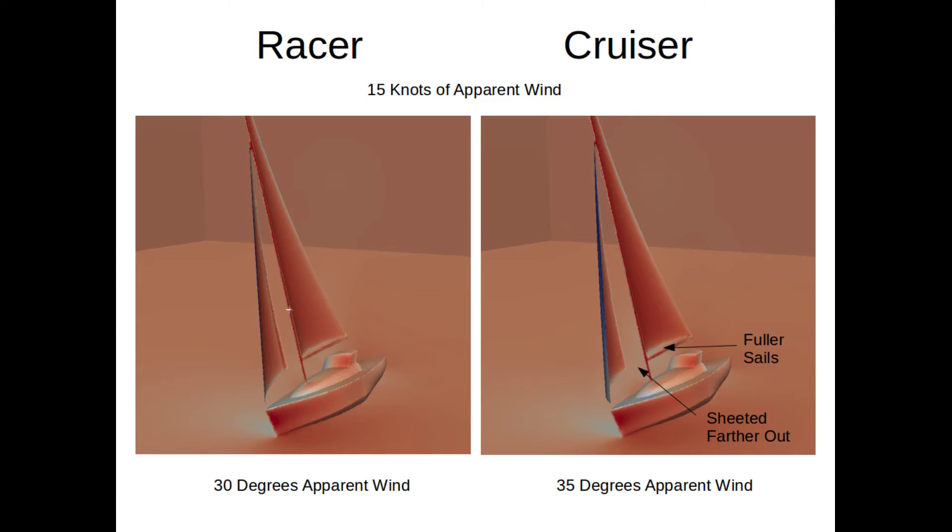Here are the two boats viewed from essentially upwind. The colorization is based on pressure where red is high pressure and blue is low pressure. We're looking at the high pressure side of the sails. At first glance these two pictures look pretty similar, but if you look carefully you can see that the racer sails are sheeted closer in than the cruiser. And also the racer sails are flatter. On the cruiser, you can actually see a little bit of the low pressure blue side of the jib peeking through because the jib has quite a bit more curvature.